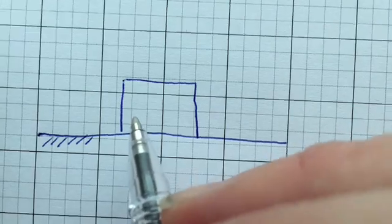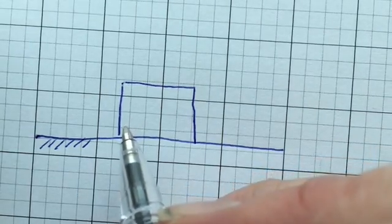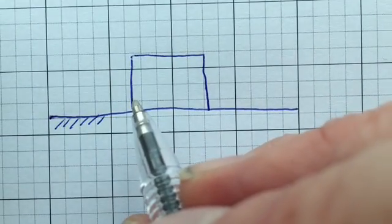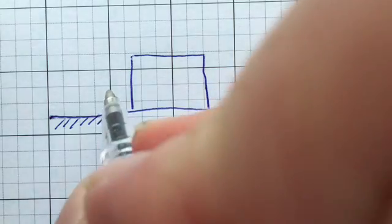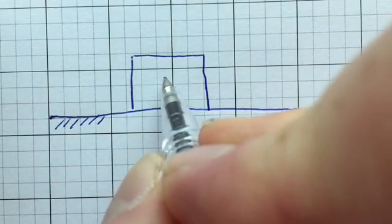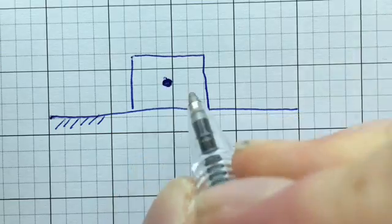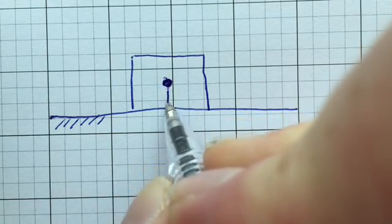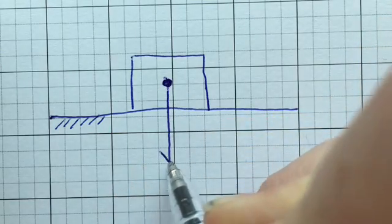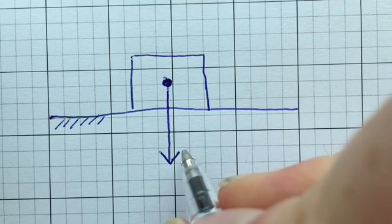Now we're going to consider all of the different forces acting on it. One of the first forces I'm going to consider is gravity from the planet Earth. I'll represent that with Fg at the center of mass of the object.